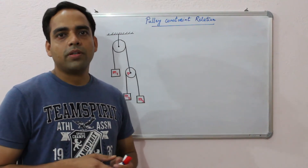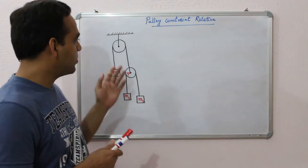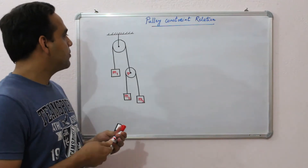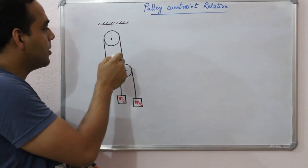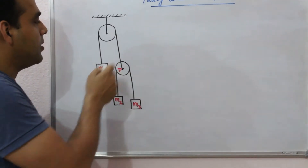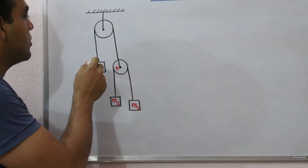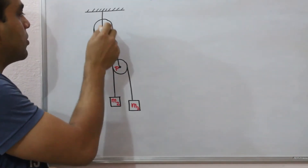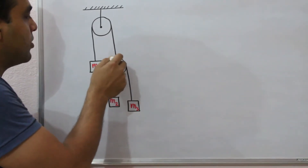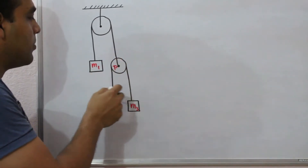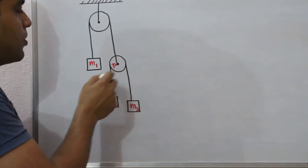Hello friends, today I am going to explain how to write down the pulley constraint relation with this example. The system consists of a fixed pulley attached to the ceiling and a movable pulley P. A block M1 is attached with the help of a rope across this pulley. At the other end of this rope we have a movable pulley, and two blocks M2 and M3 are attached across this pulley with the help of a second rope.